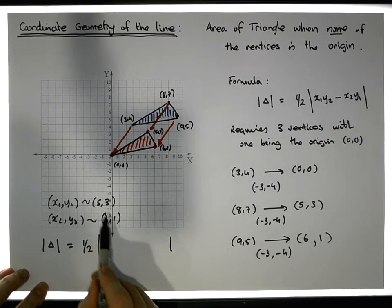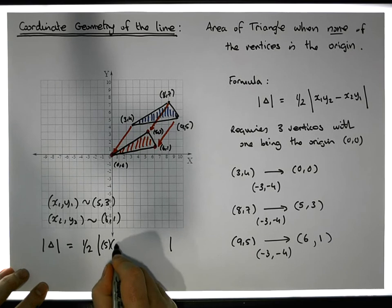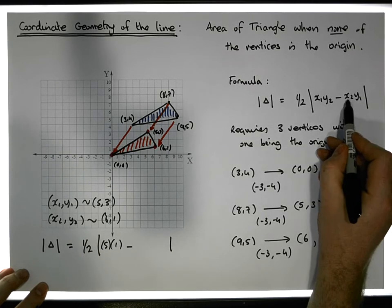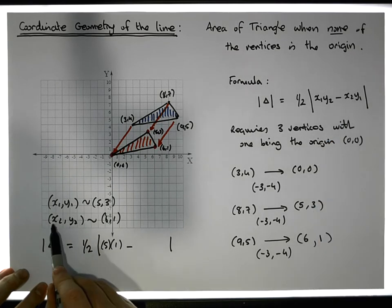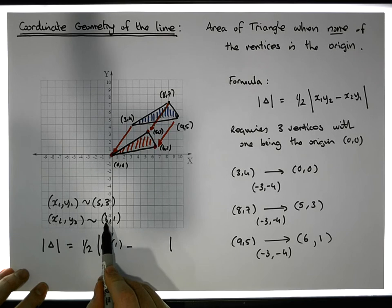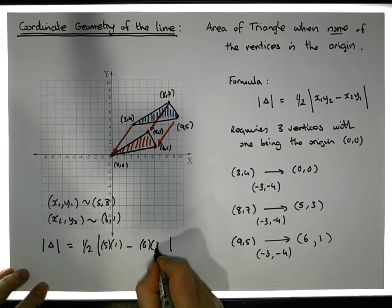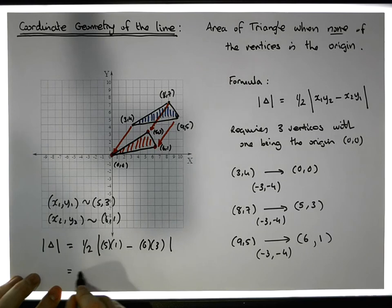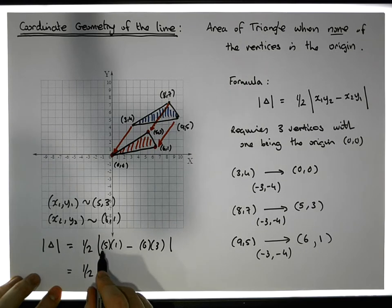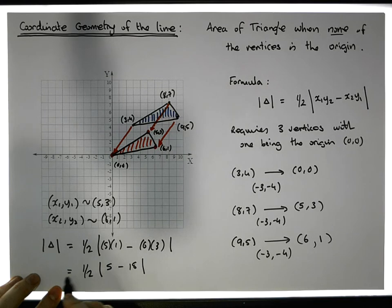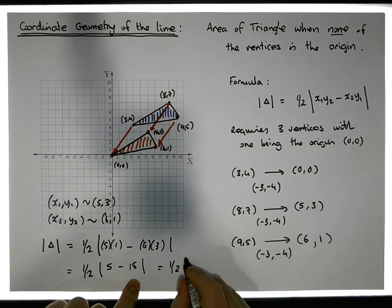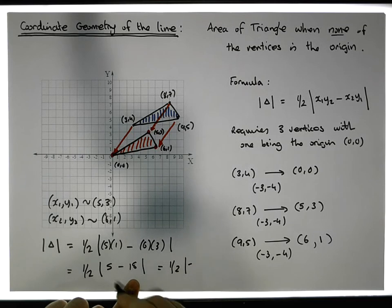So now we have our two points and now the area of the triangle. The area of our triangle is equal to a half times the absolute value of x1 times y2, so 5 times 1, minus x2 times y1, so 6 times 3. So that gives us a half times the absolute value of 5 times 1 is 5, minus 6 times 3 is 18.